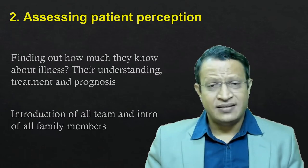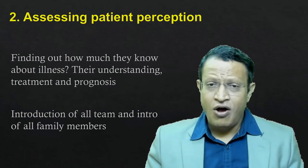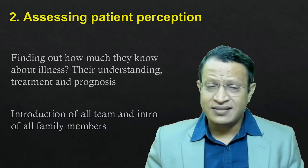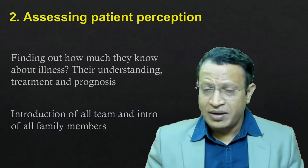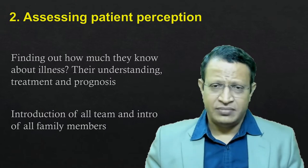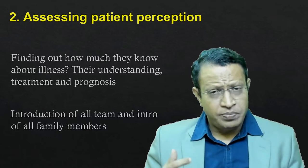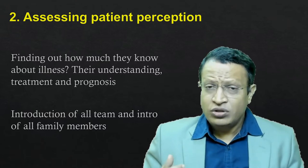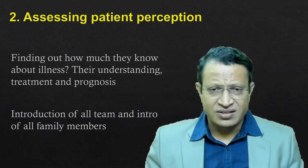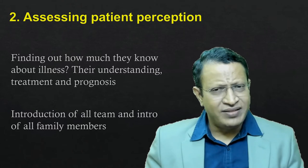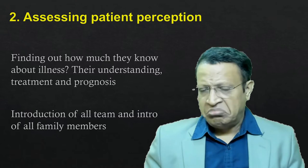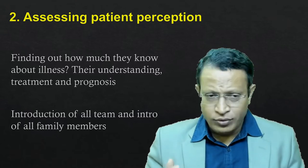Coming to the second step — assess the patient's perception of the situation, or if the patient is no more, assess the perception of the family members. Invite them and ask what they think about the patient's condition, what their understanding is, and what their prognosis expectation is. They would have done their homework — contacted family members, healthcare providers, or even searched the internet.